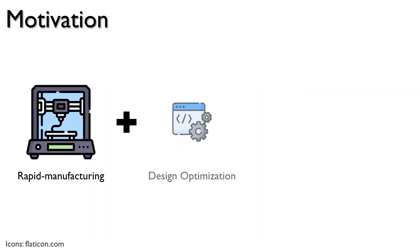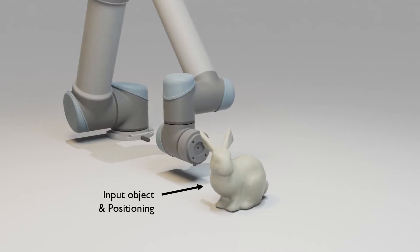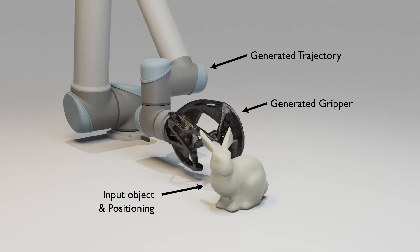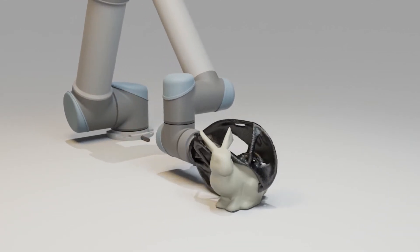Motivating this work is the insight that rapid manufacturing and design optimization can be used to expand the space of shapes that can be passively grabbed. We present an algorithm that, given a target object and its positioning relative to the robot arm, generates a 3D printable passive gripper design and an accompanying insert trajectory that approaches the object without collisions.